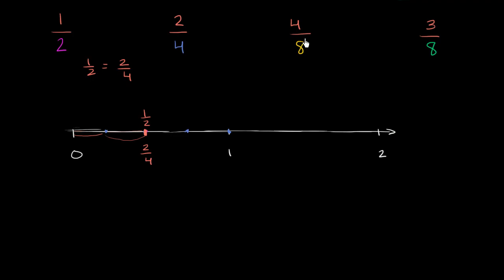Now what about 4 eighths? Well, let's split the part of our number line between 0 and 1 to eight equal sections. So if we take each of those four equal sections and split them into two. So now we have 1, 2, 3, 4, 5, 6, 7, 8. I can't draw it perfectly, but I'm trying to make them equal sections. So now it's eight equal sections.